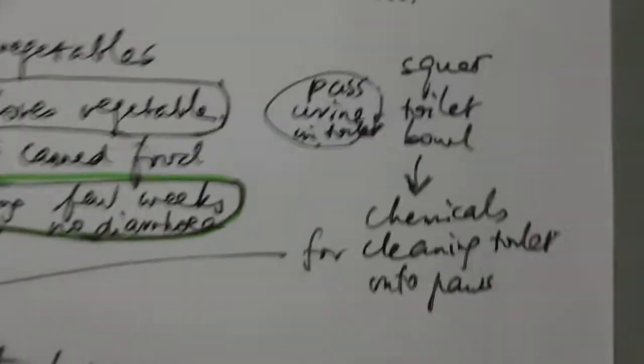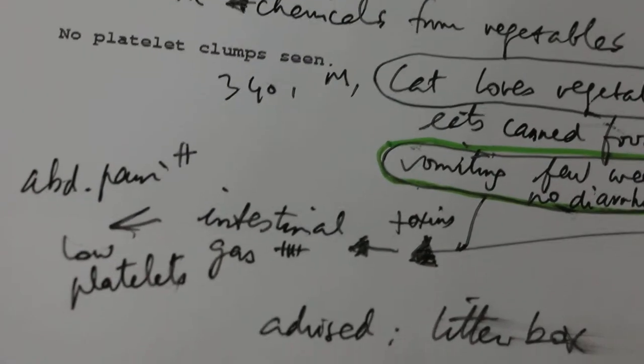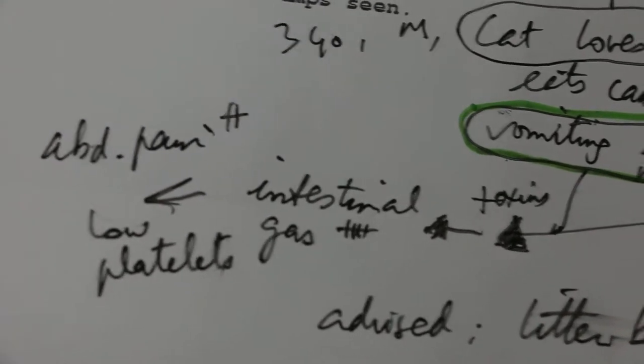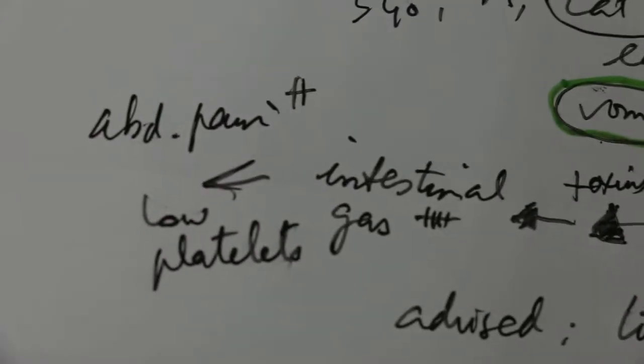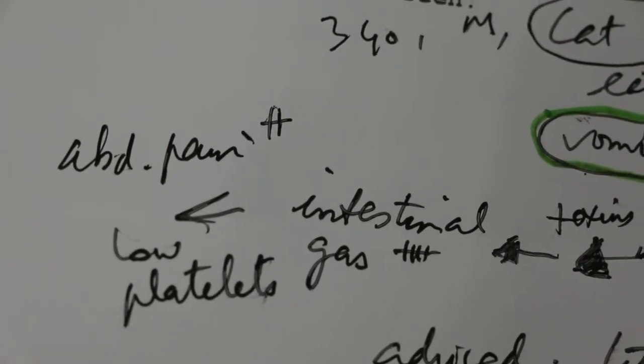So my theory is that this cat has been poisoned by the chemicals from the veggies and from the squat toilet bowl, causing abdominal pain and a moderate amount of intestinal gas.